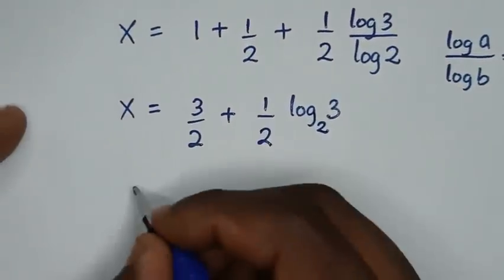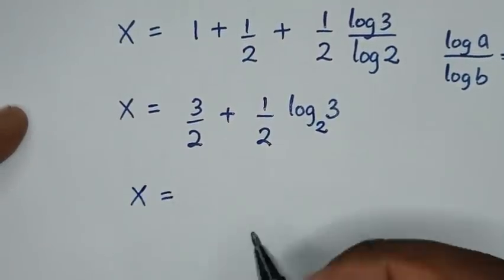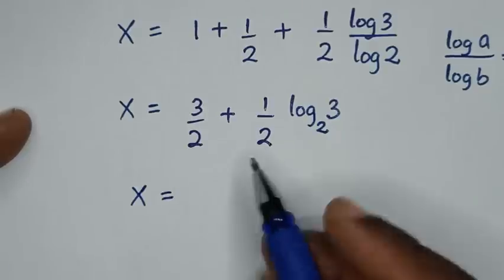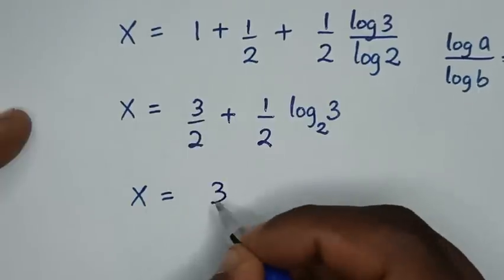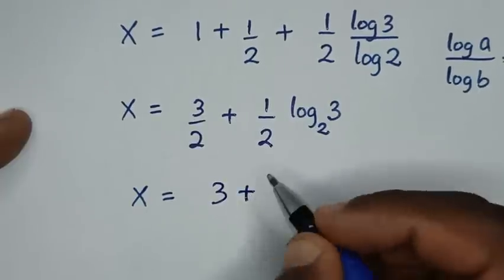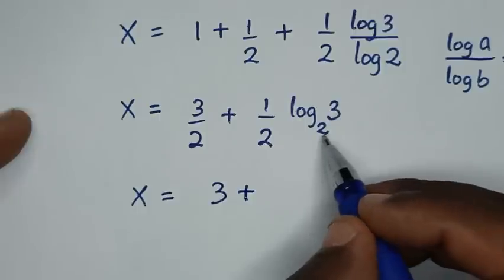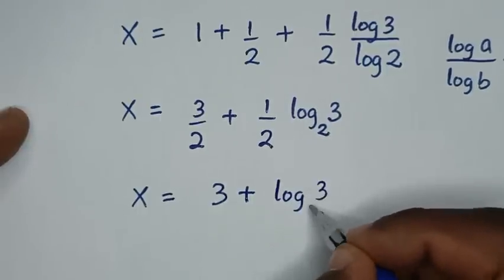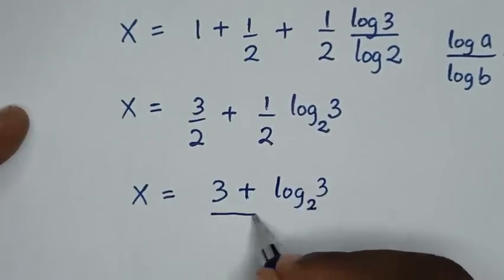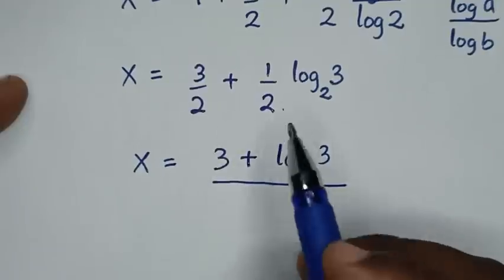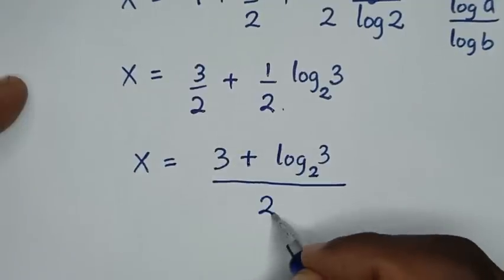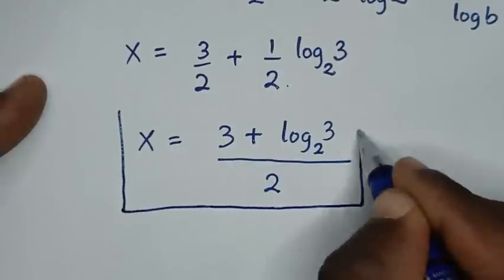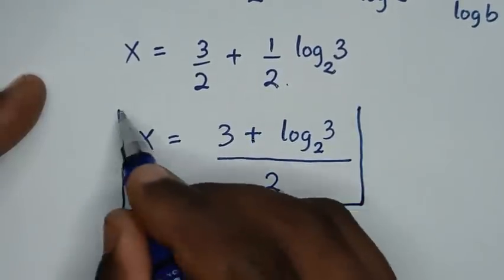In the next step, x is equal to 1 plus 1 half as an improper fraction is 3 over 2, plus 1 half log of 3 base 2. Using a common denominator of 2, it will be 3 plus log of 3 base 2, all over 2. So this is the final answer for the value of x in our problem.